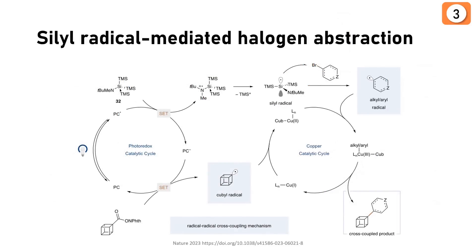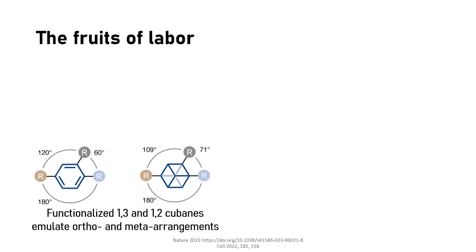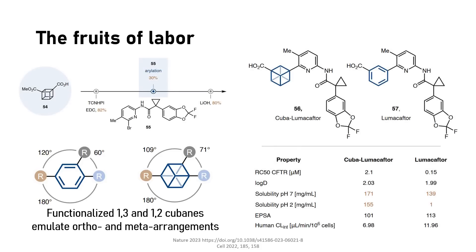A key development was a new aminosilane which not only reductively quenches the photocatalyst to prepare for decarboxylation, but also generates the active radical via halogen abstraction, fueling the copper catalytic cycle. The special thing about these novel 1,2- and 1,3-functionalized cubanes is that they closely emulate ortho- and meta-substituted phenyl rings due to size and exit angles of substituents. The powerful conclusion was the synthesis of a cubane analog of lumacaftor. Incorporation of cubane as an isostere improved solubility significantly, particularly at acidic pH, which might enable improved absorption in the GI tract. This may be due to modulation of the acid's pKa or disruption of pi interactions.